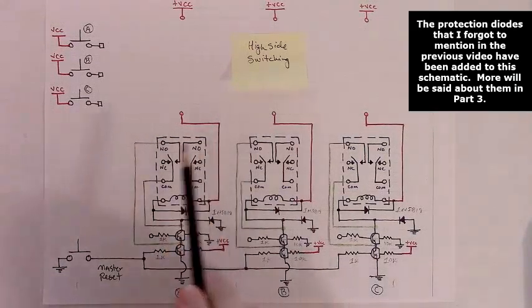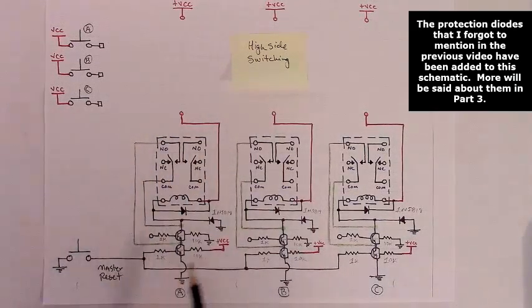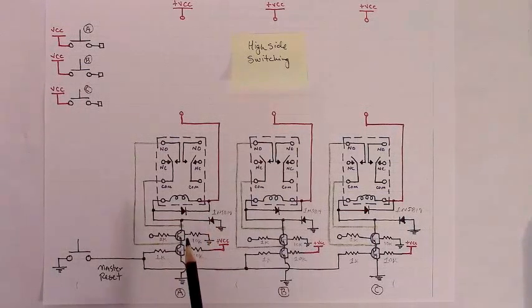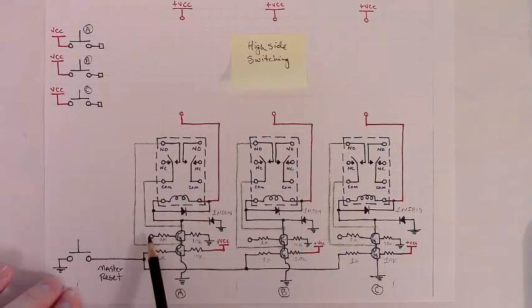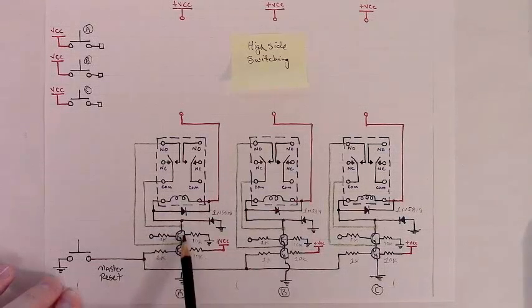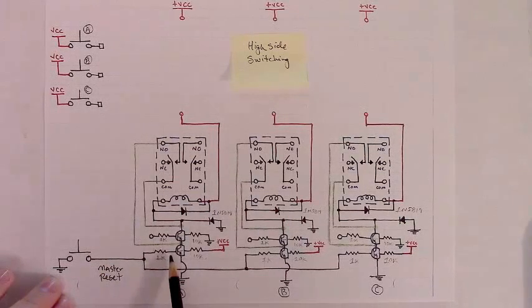What I've done is added in we focused on one latching relay circuit and managing it switching. Latching it on by applying VCC to the base of the top NPN and using as a master reset or being able to unlatch it at any point in time using a second NPN whose base is pulled high.